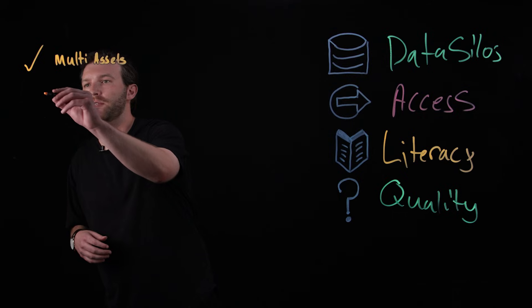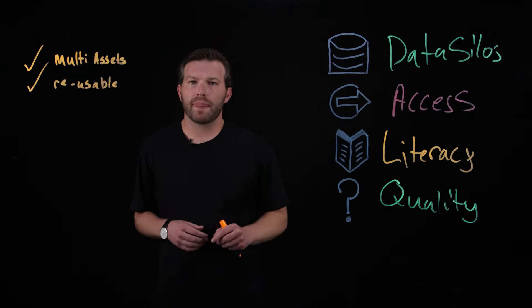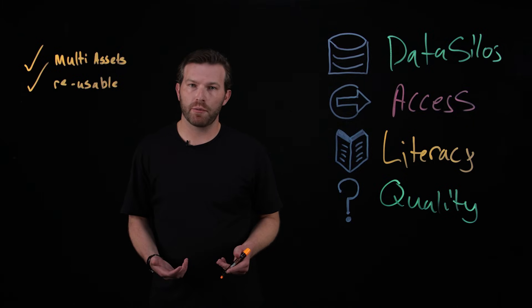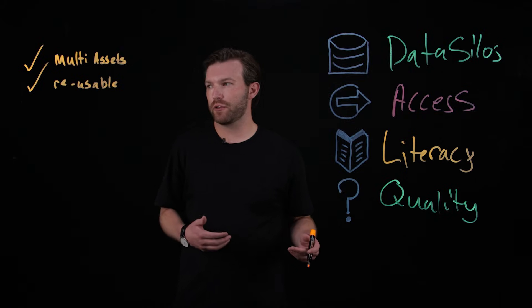Data products are meant to be reusable for multiple different use cases. Just like how you can buy a bag of apples, you can eat one apple, you can use three of those apples to make an apple pie, and you can use the remainder to make an applesauce. It's reusable for multiple different use cases.